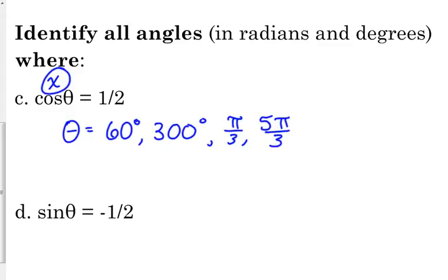Most of the time, we're going to have two answers. 60 degrees and pi over 3 are the same angle. So, I'm considering that one answer. 300 degrees and 5 pi over 3 is the same angle, just degrees and radians.